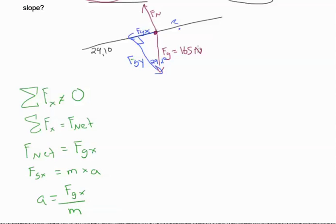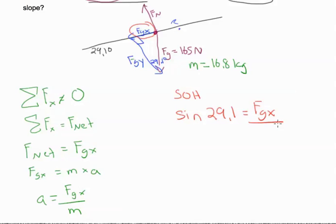But we do know that we're going to need mass. So while I'm here, I can say mass is equal to the weight divided by 9.8 to give us 16.8 kilograms. So now we can look at this triangle and we want to know this. It is opposite. So we're going to use SOH. So sine 29.1 is equal to opposite divided by hypotenuse. We can do our math to see that our Fg x is equal to 80.2 newtons.